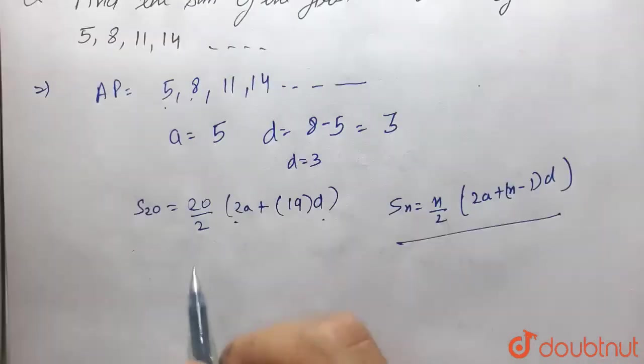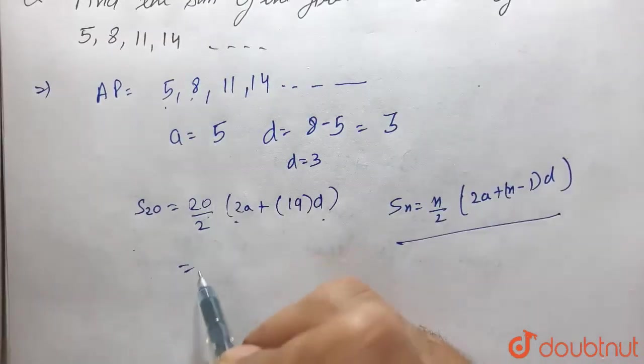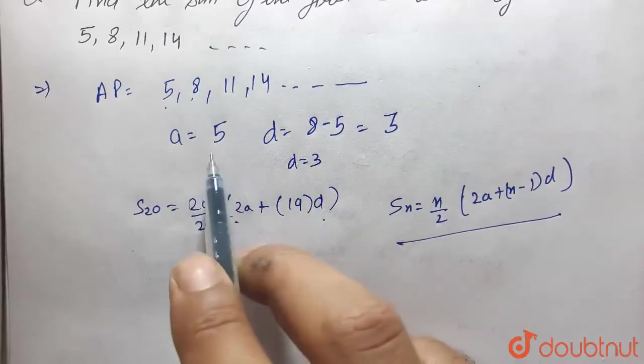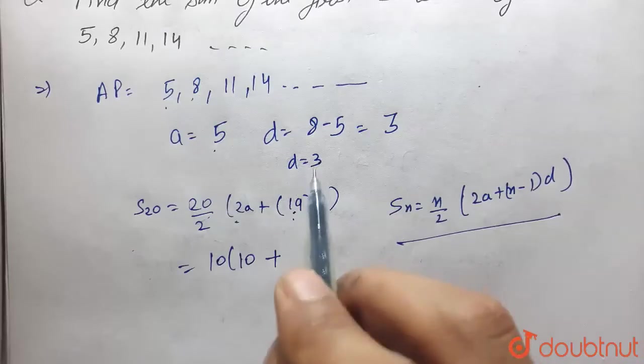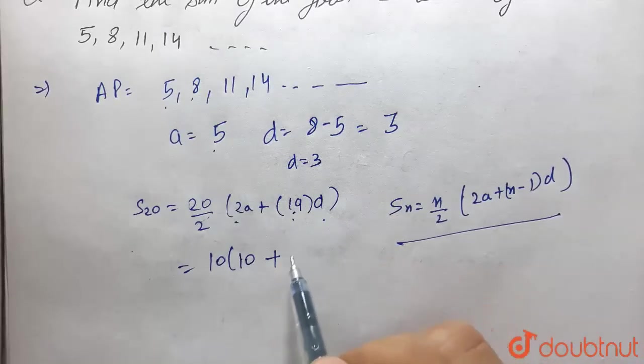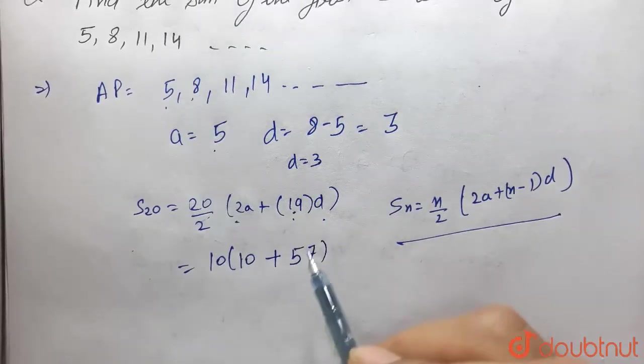Here putting the value of a and d, 20/2 becomes 10. 2 into a is 10 plus 19 into 3, that is 57. By solving this,